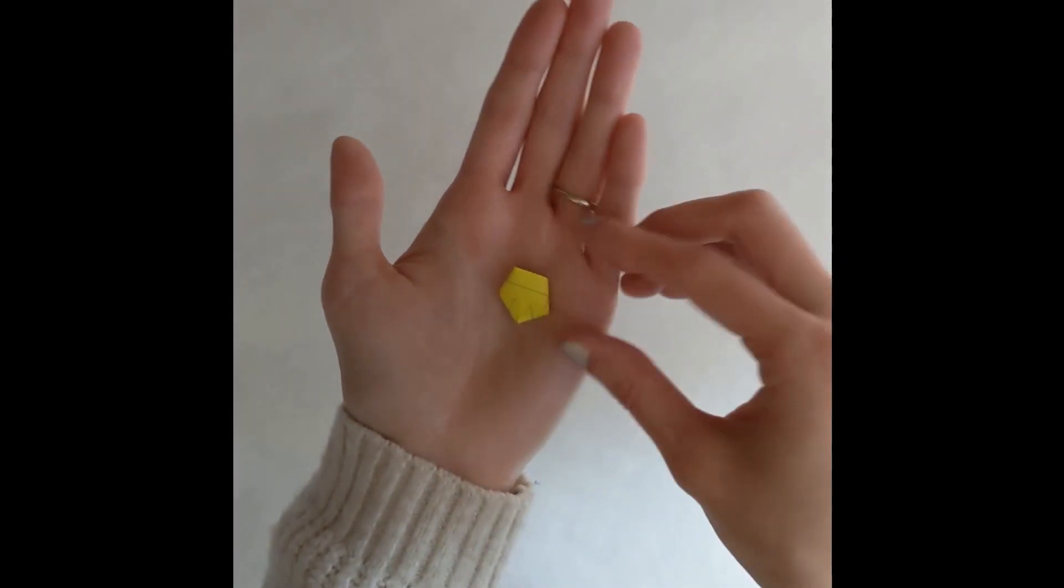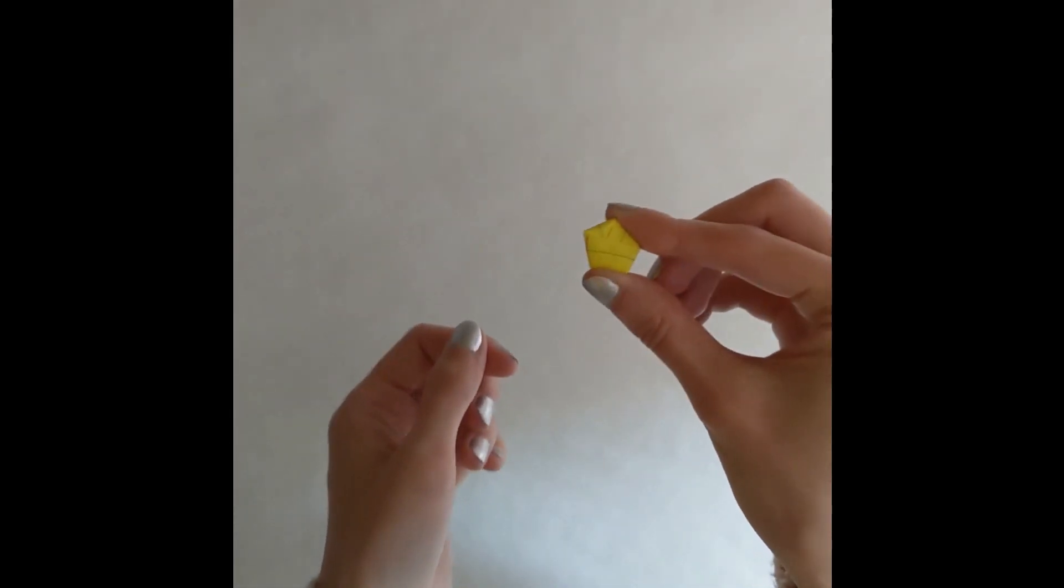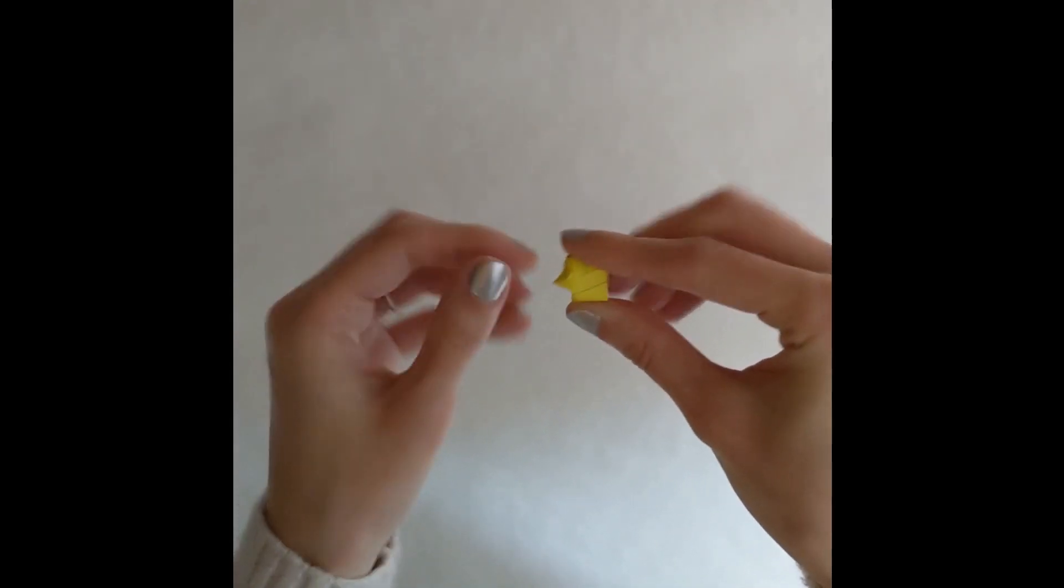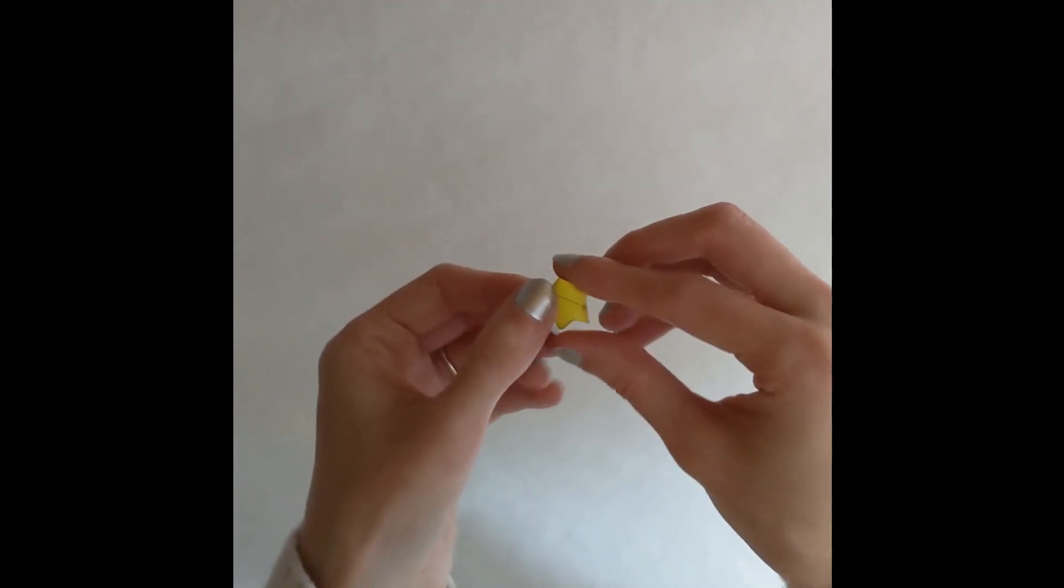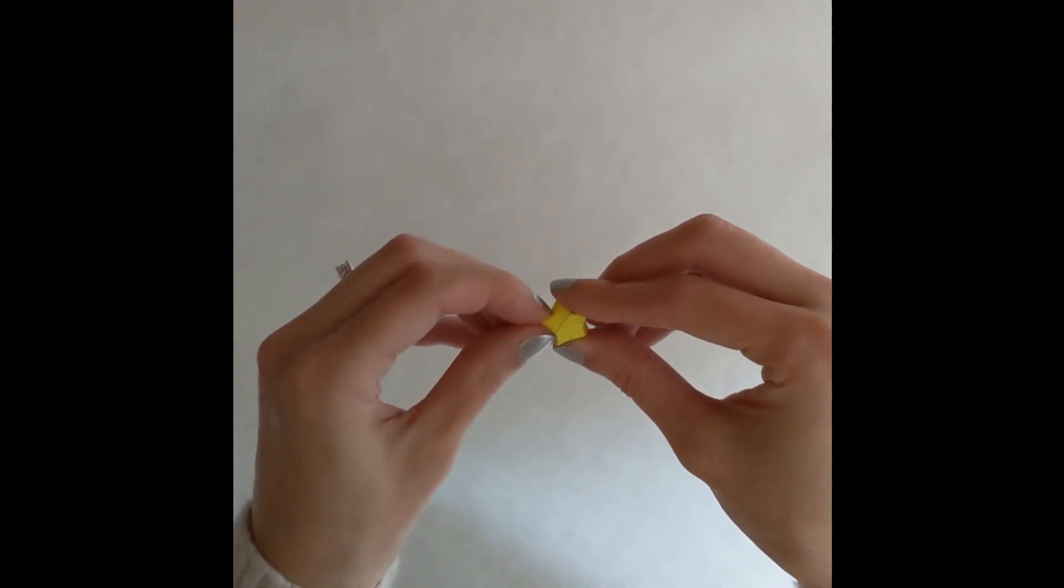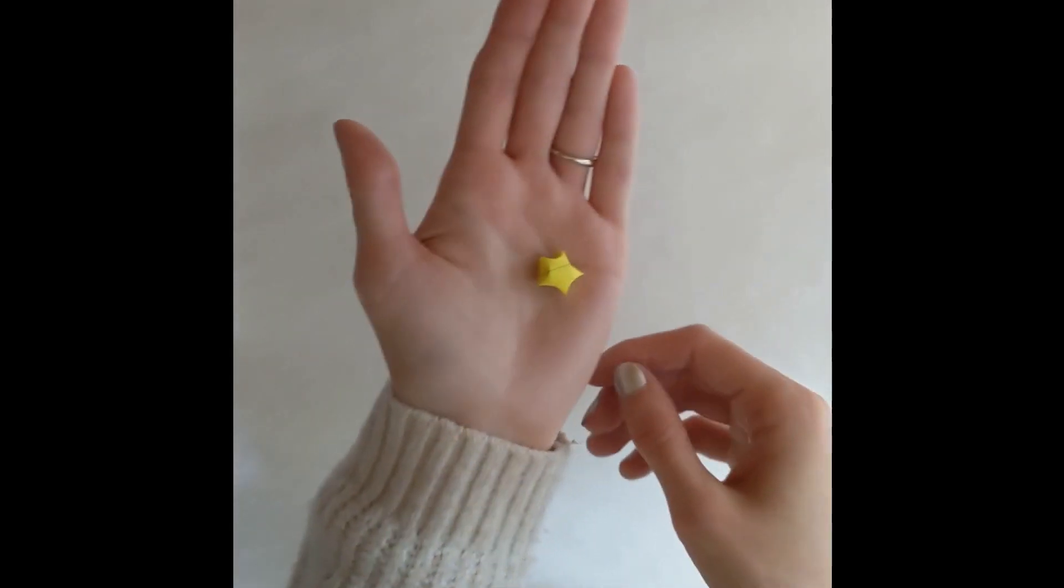And now that you have a perfect pentagon, you'll want to grip it by two of the flat edges. And then proceed to crease all five of the flat edges with your other hand. And there you have a TBR star. Feel free to adjust the creases in the star if it looks a little wonky from different angles.